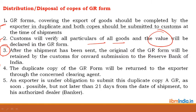After the shipment has been sent, the original GR form is retained by customs for onward submission to the Reserve Bank of India. The duplicate copy of the GR form is returned to the exporter through the clearing agent. The exporter is under obligation to submit the duplicate copy of the GR form as soon as possible, but not later than 21 days from the date of shipment.